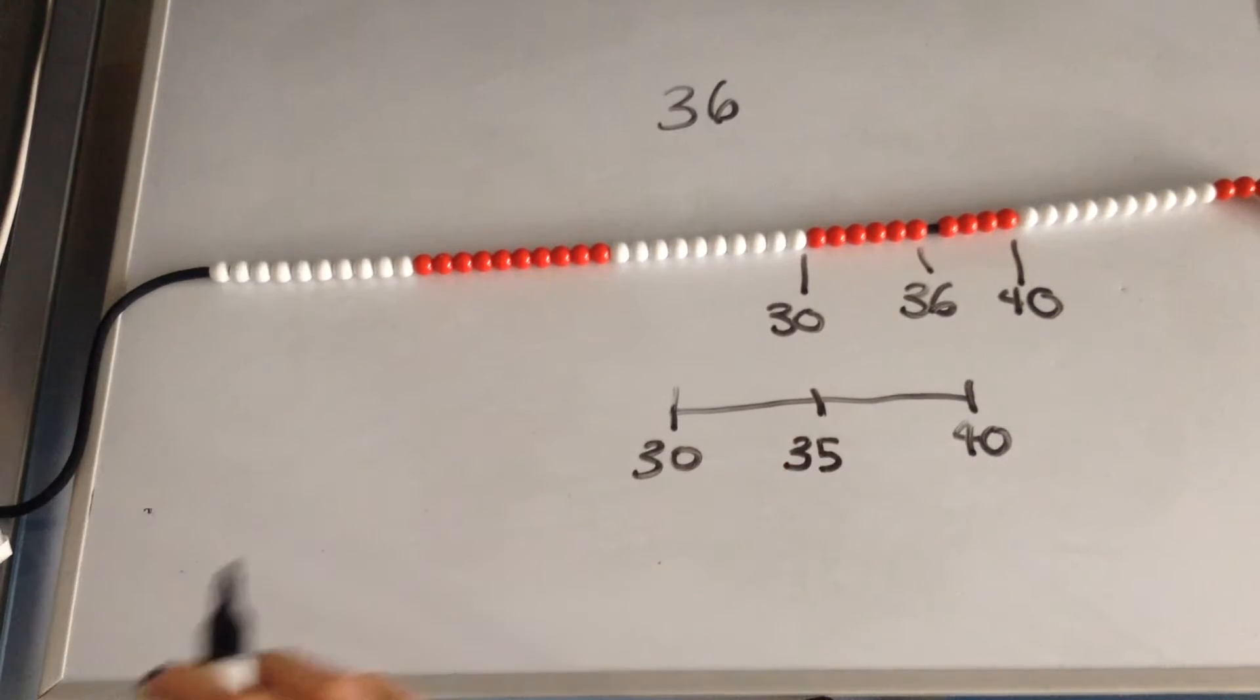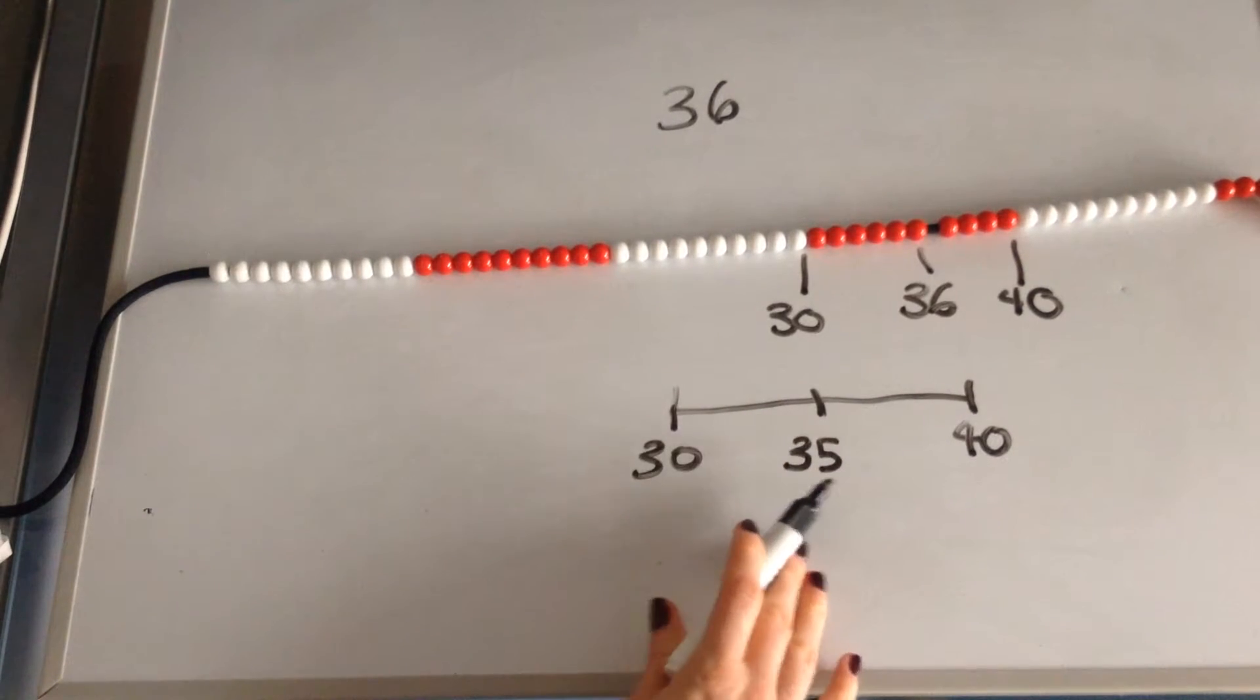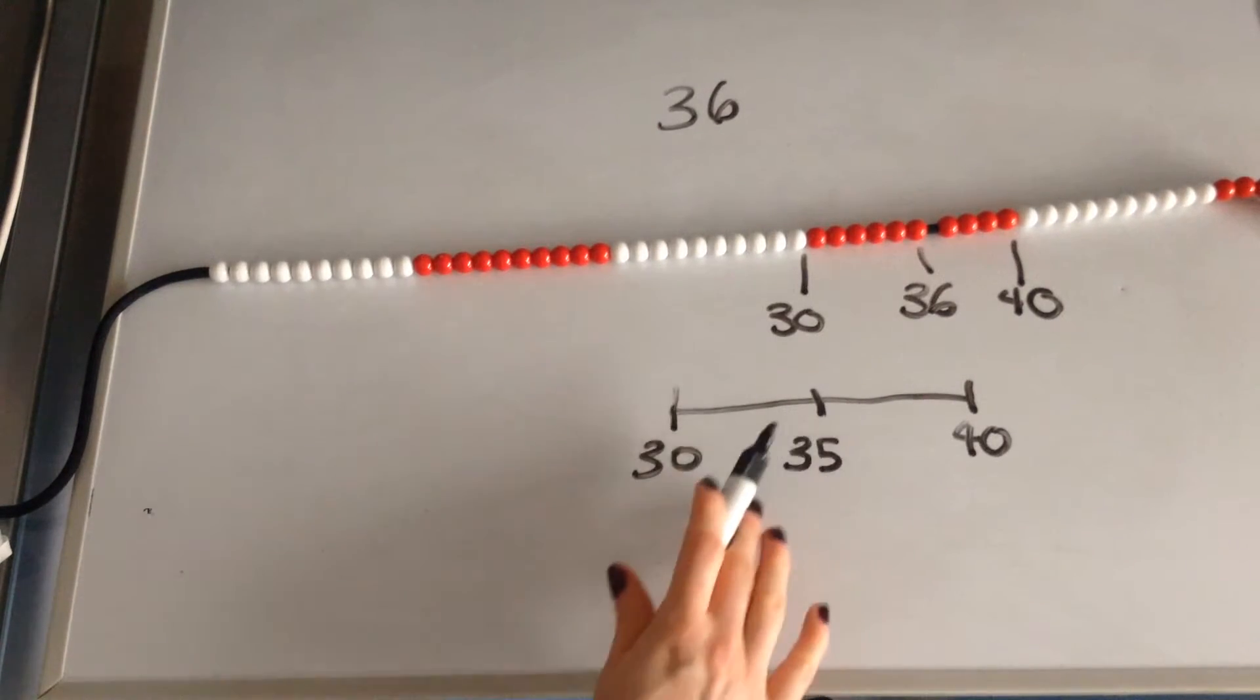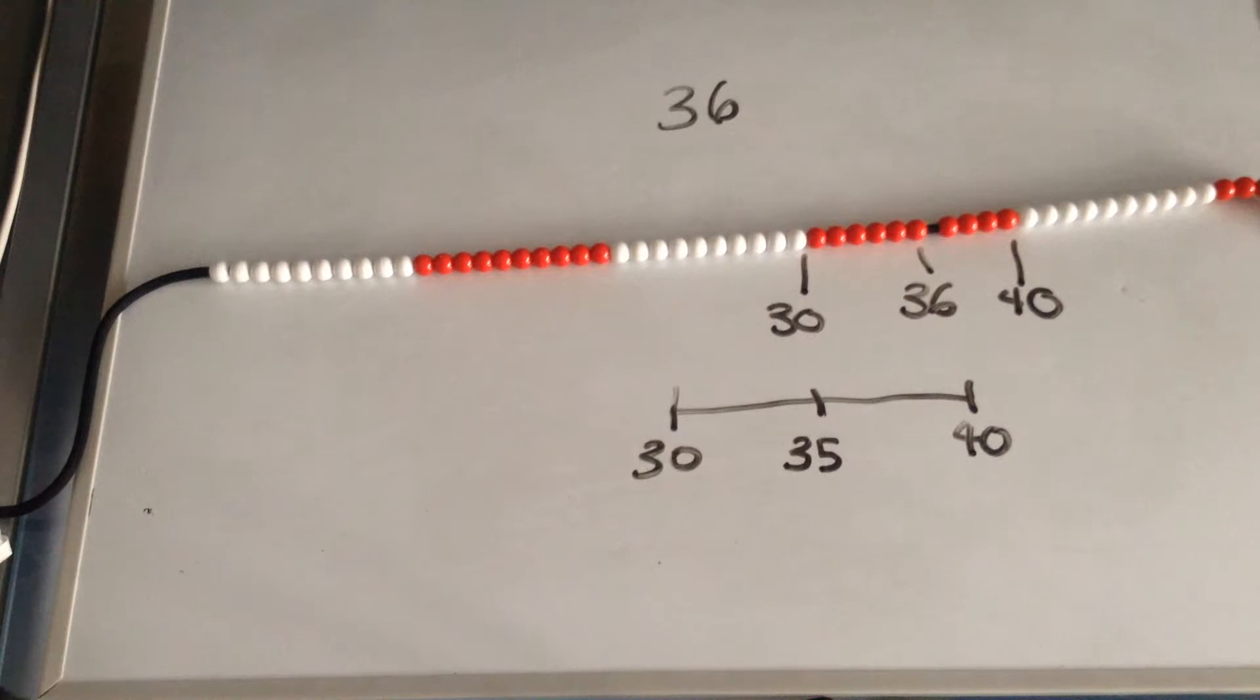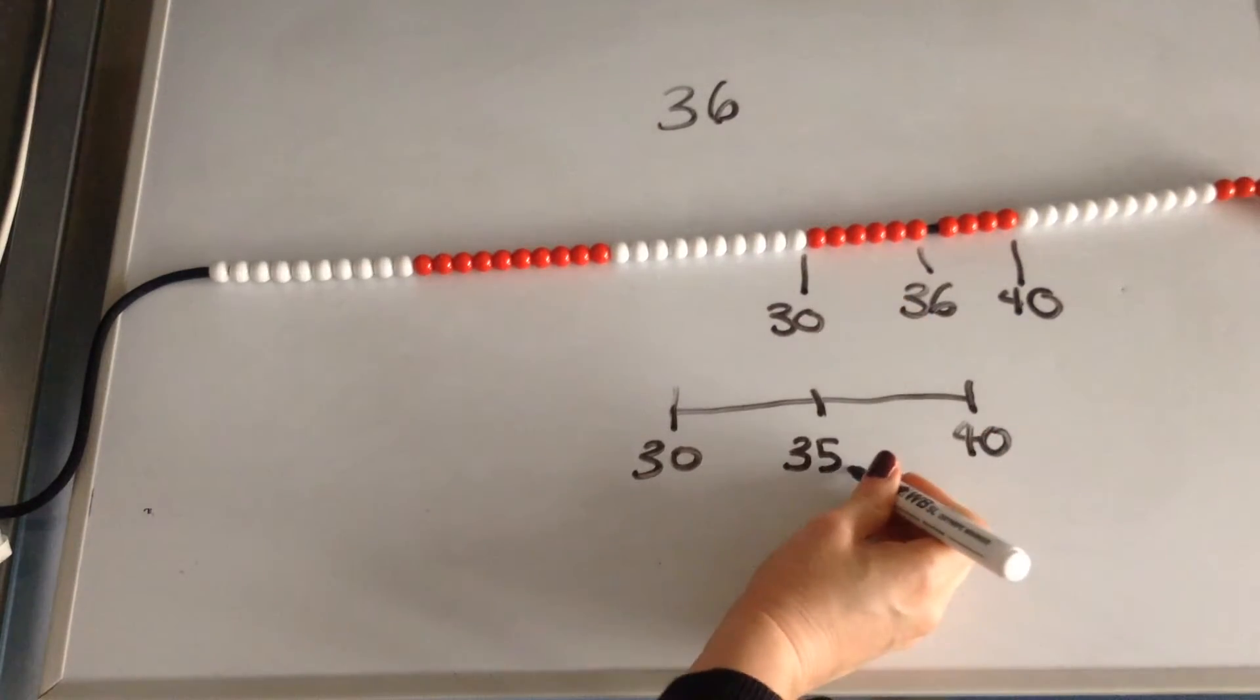The reason we look at 35 as the number that decides whether it's closest to 30 or 40 is because 35 could always have a number 0.001 or 0.something if you imagine it has its decimal point at the end. So it could always be slightly larger.